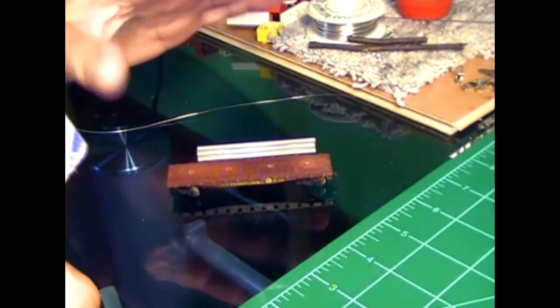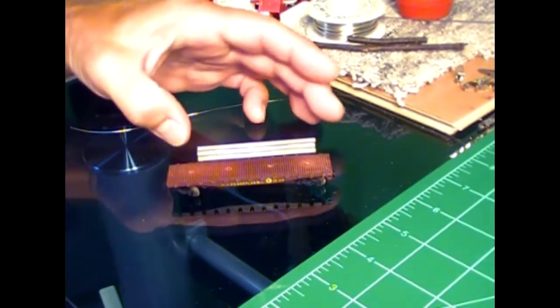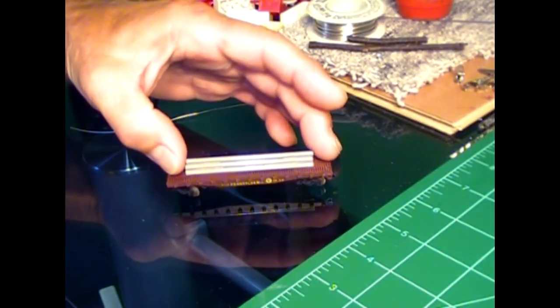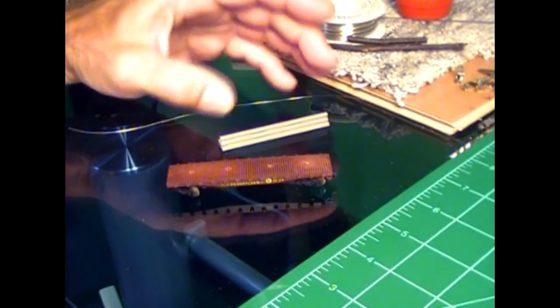That way you can stick it down there so it won't fall off on your track. And it's removable later on if you want to change.